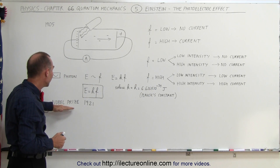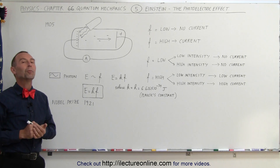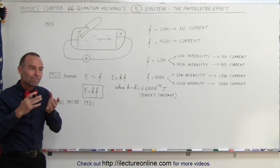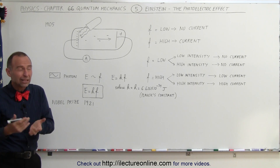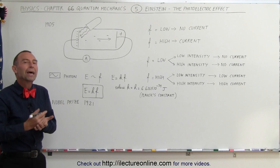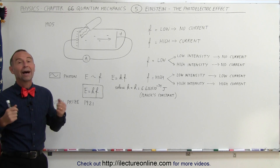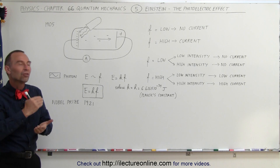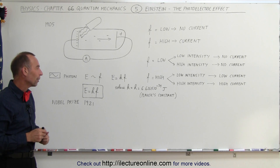Planck's constant is equal to 6.626 times 10 to the minus 34 joules. For this work, in 1921, Einstein received the Nobel Prize. It was a monumental achievement — not a discovery in isolation, since in 1900 Planck had already described this mathematically, but there was no real experimental proof. Einstein in 1905 was able to prove that energy was quantized, and for that he received the Nobel Prize.